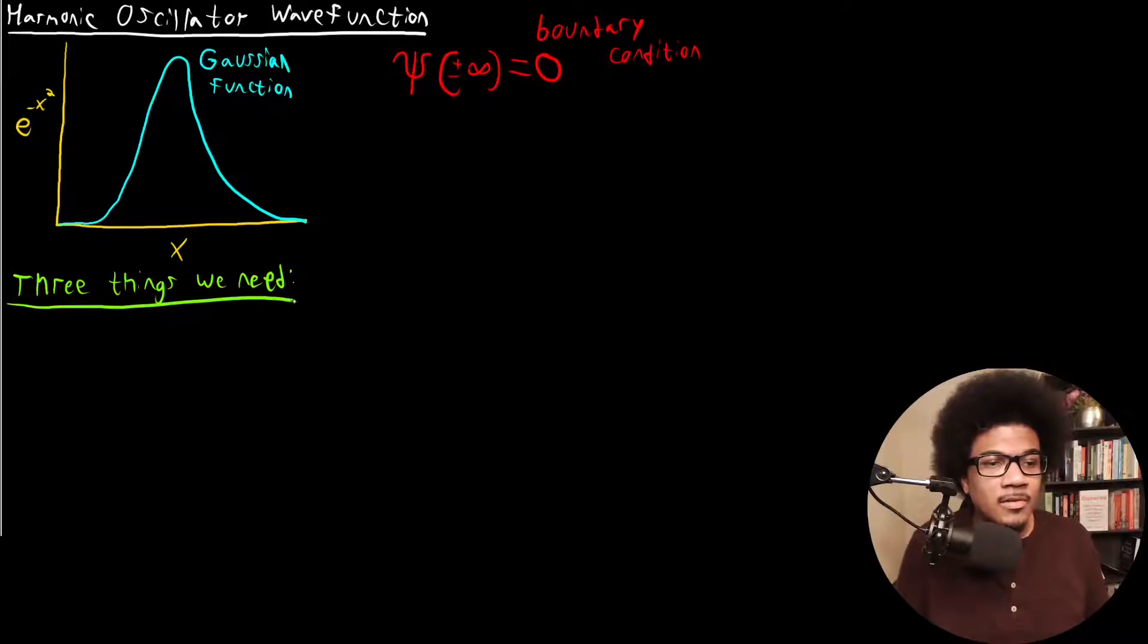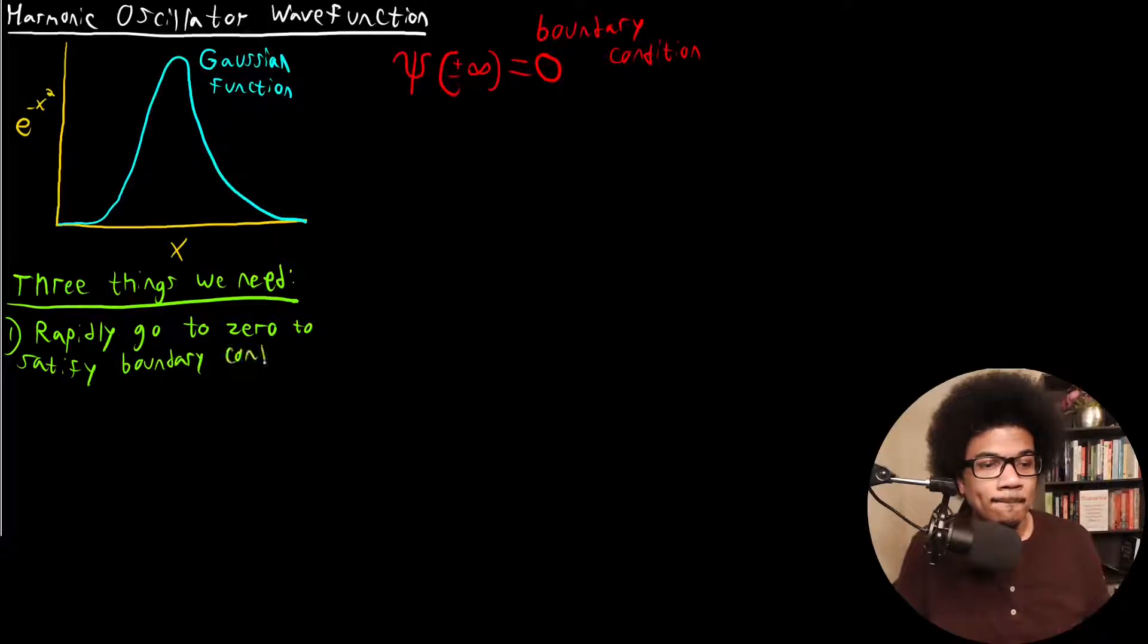So the first is directly related to this boundary condition. This wave function, whatever wave function we end up with, has to go to zero very, very quickly. It has to go to zero at those boundary conditions. So it has to rapidly go to zero to satisfy boundary conditions.